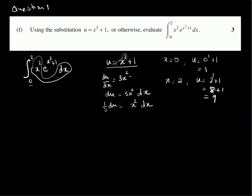So, 1 third du is x squared dx, and e to the power of x cubed plus 1 is really e to the power of u, because u is x cubed plus 1. So, we can convert this whole equation now in terms of u. So, now the integral from 0 to 2 becomes from 1 to 9.